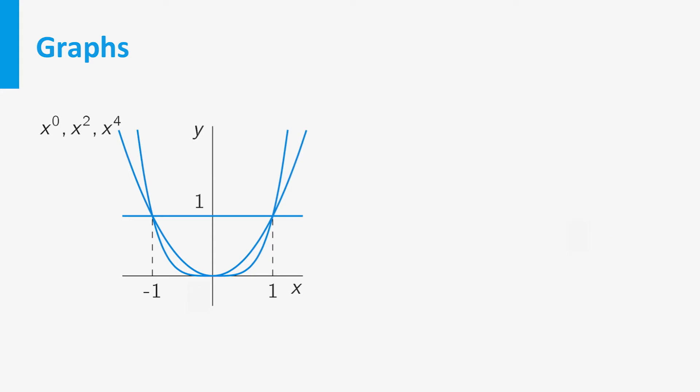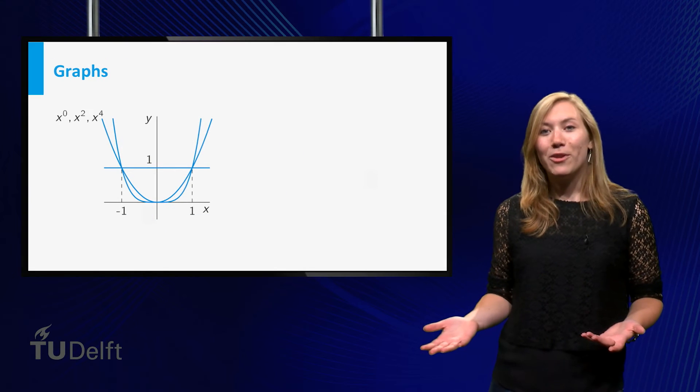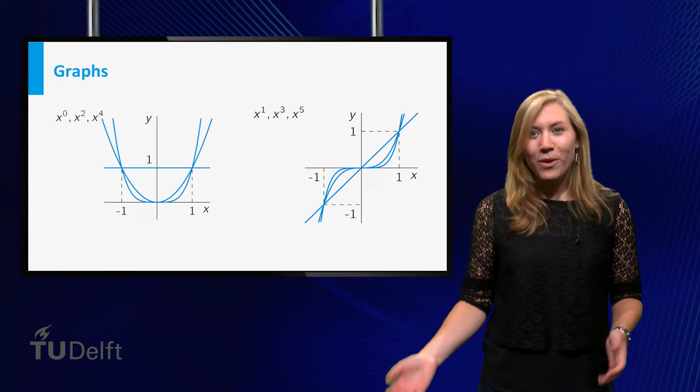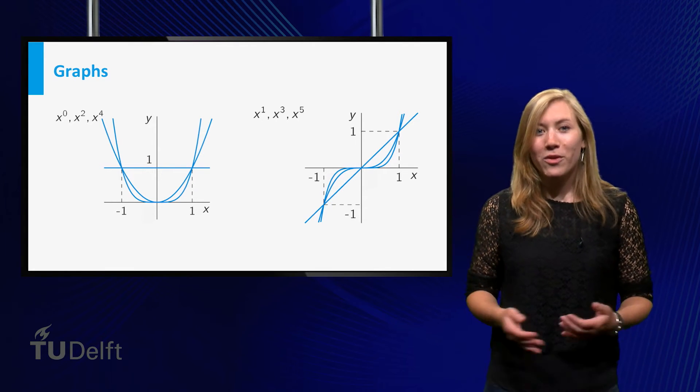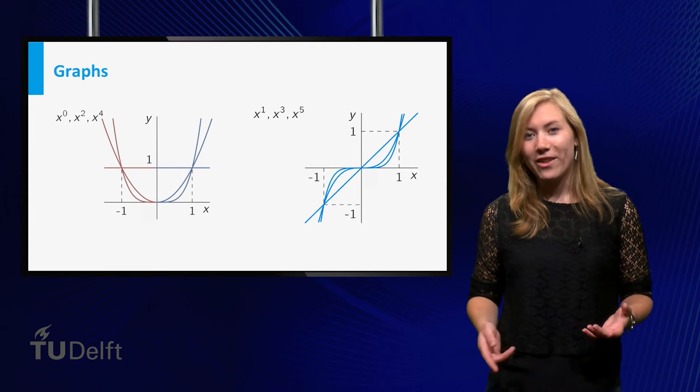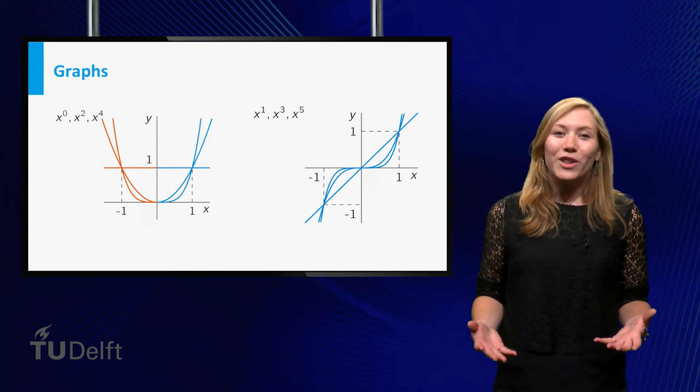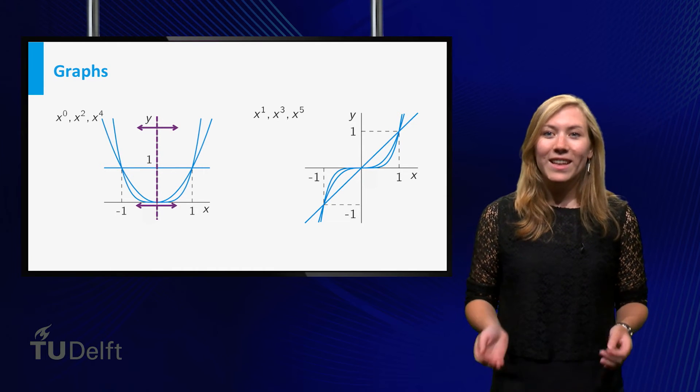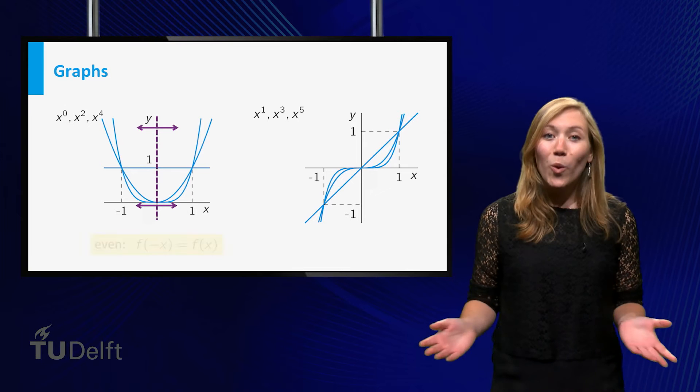If we plot the graphs of even powers of x into one single picture, we see the similarity. For even powers, the graphs are line symmetric in the vertical axis. These functions are called even, which means that f of minus x equals f of x for all x.